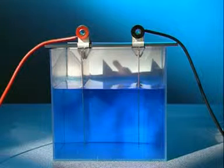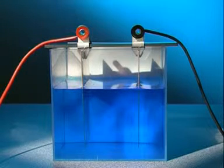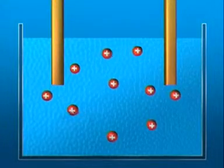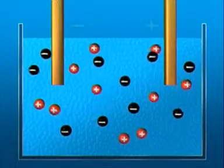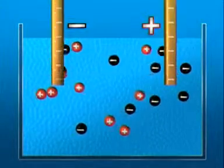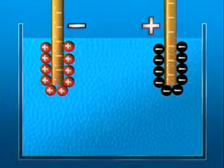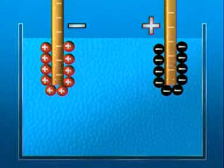To explain these changes, imagine you can see the particles in copper-sulfate solution. There are positive copper ions and negative sulfate ions. Switch on the power supply and the copper ions are attracted to the negative electrode. The sulfate ions are attracted to the positive.